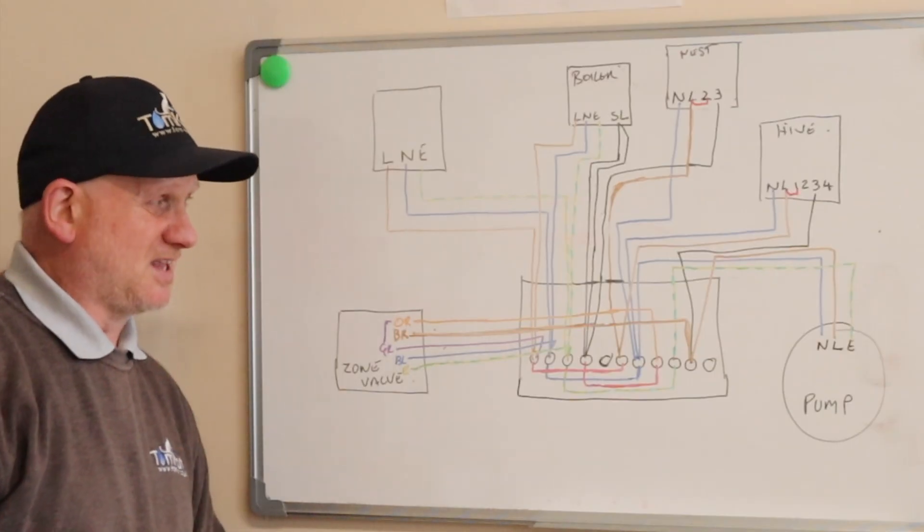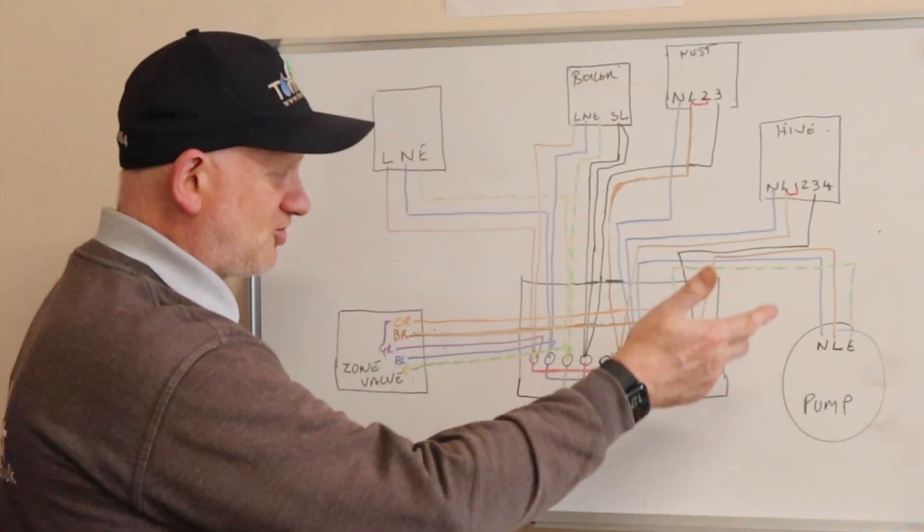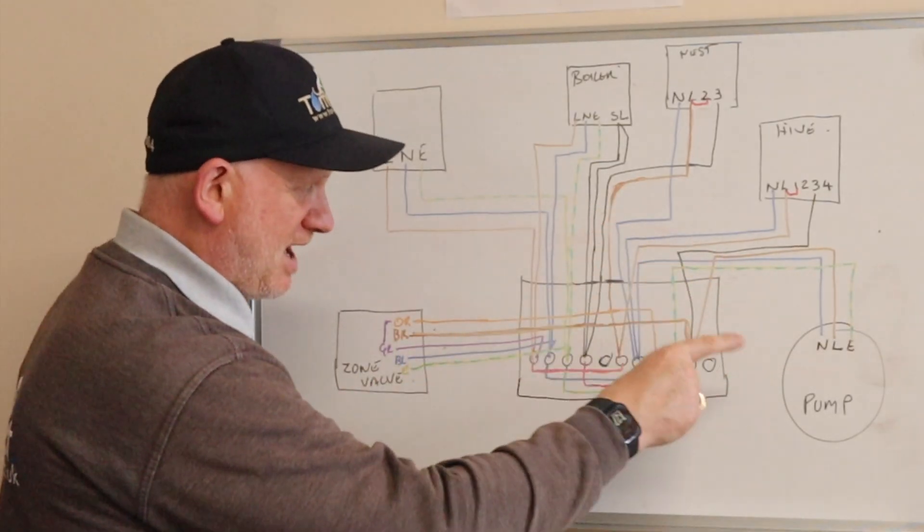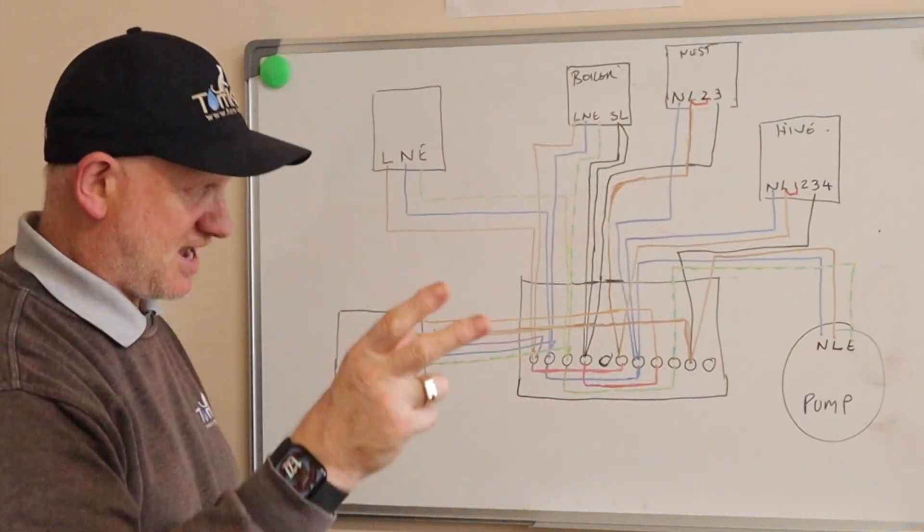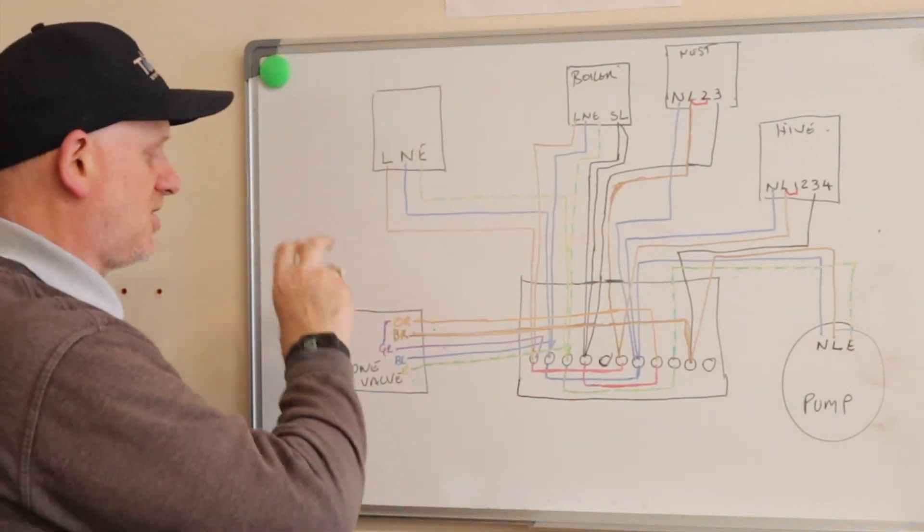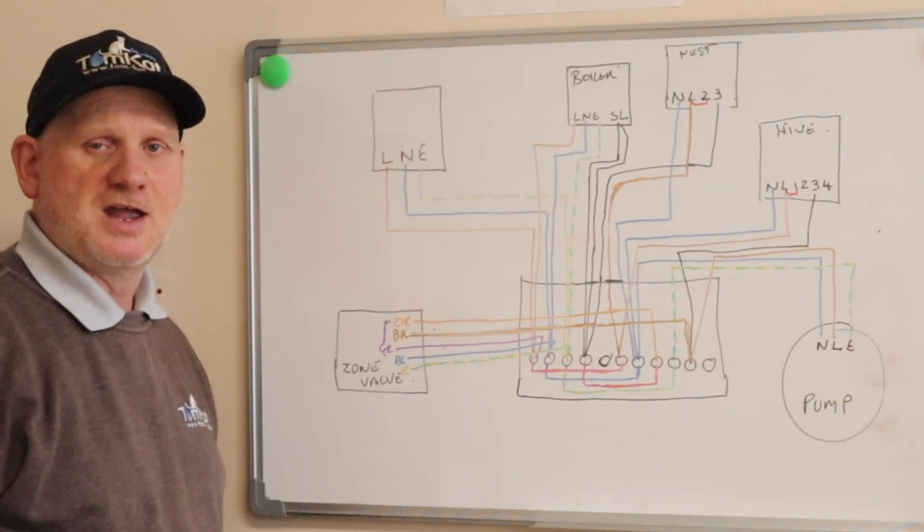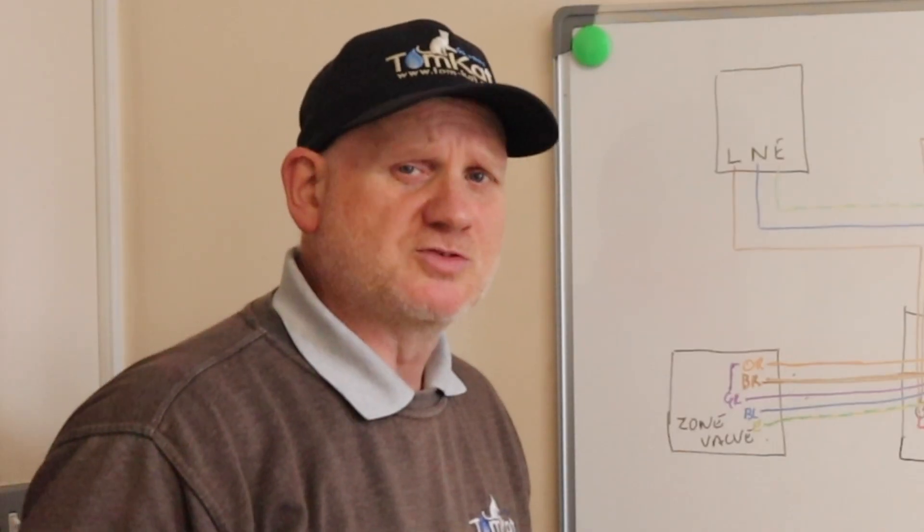So that's basically how I wired it up. Neutral and earth for the pump coming from here. The power for the pump was actually coming from the stat. So as the stat was made it brought the pump on. It also operated the zone valve and it was the zone valve which brought the boiler on. Hopefully that makes some sense.